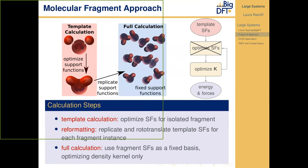Putting these ingredients together, we have what we call the molecular fragment approach. The idea is to do a full linear scaling calculation on a template system — in this case a single water molecule, typically an isolated gas phase molecule, though it could also be done in an implicit solvent. We then replicate these optimized support functions across the full system during this rotation-translation process, and the full calculation is performed using fixed support functions. For the large system we can completely eliminate the support function optimization loop, resulting in significant computational savings.